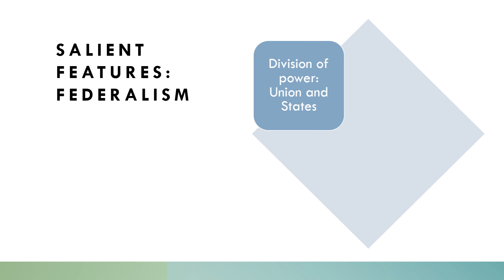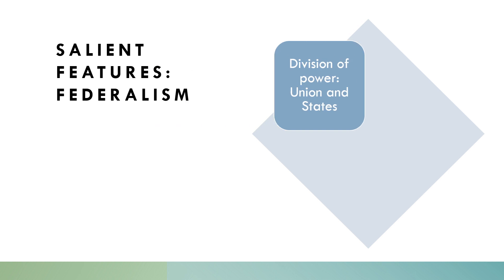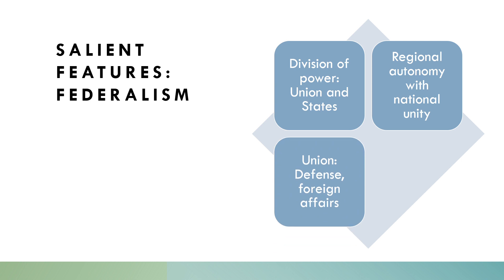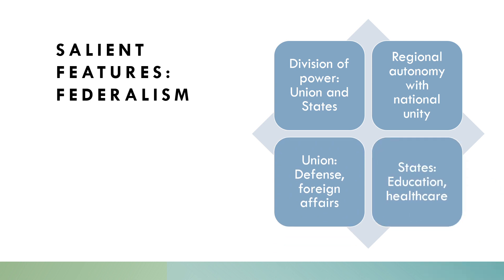India adopts a federal system distributing power between the union, that is the central government, and the states. This division ensures regional autonomy while maintaining national unity. For example, the union controls defense and foreign affairs, while states manage education and healthcare.